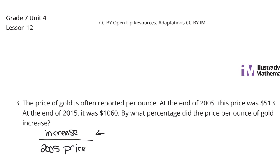Well, this increase can be found by taking $1,060 and subtracting the $513. That, of course, is $547. And, when we divide that by the 2005 price of $513, this gets us about 1 in 7 hundredths. When we move this decimal point over two spots to the left, we end up with a solution of 107% or so.